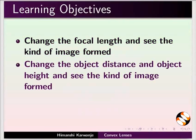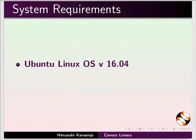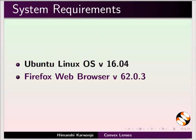Change the object distance and object height and see the kind of image formed. Calculate the magnification and length of the telescope tube. Here I am using Ubuntu Linux OS version 16.04 and Firefox web browser version 62.0.3.